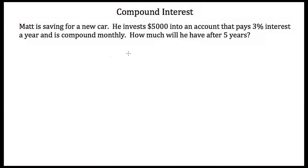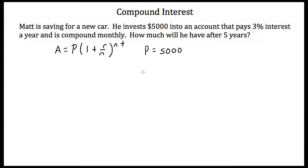Let's try an example. Matt is saving for a new car. He invests $5,000 into an account that pays 3% interest a year, compounded monthly. How much will he have after 5 years? We'll use our compound interest formula: A is equal to P times (1 plus R over N) to the NT power. P is $5,000, R is 3% per year or 0.03, N is 12 because it's compounded monthly, and T is 5 years.